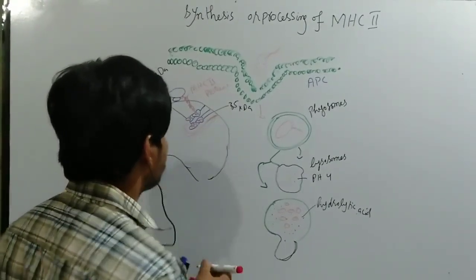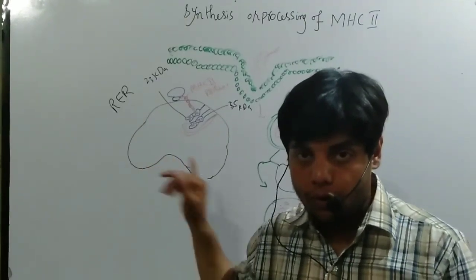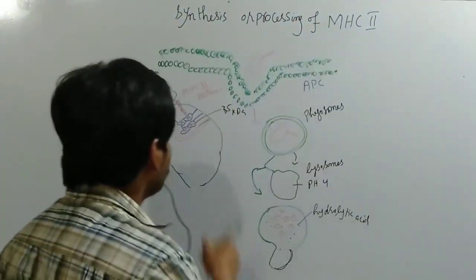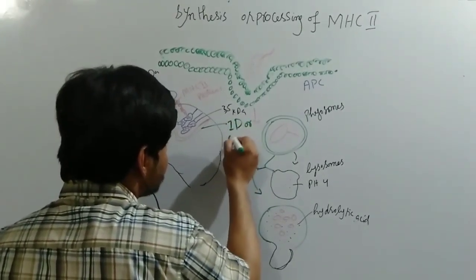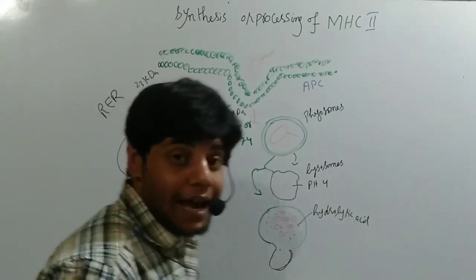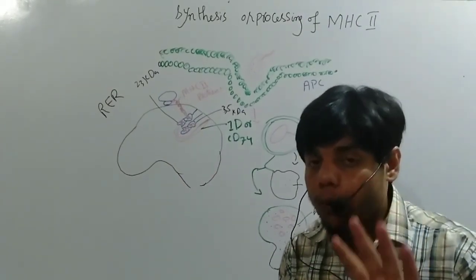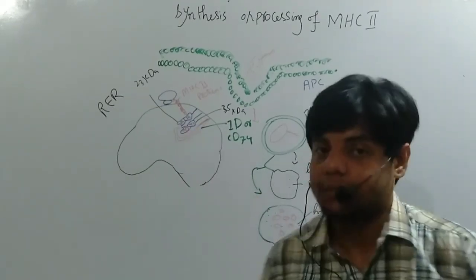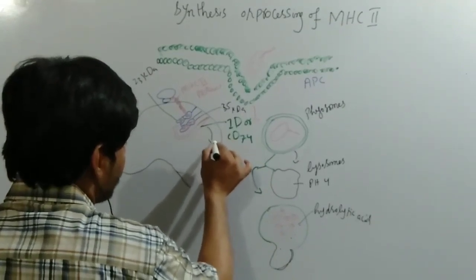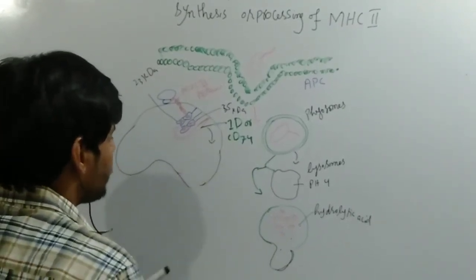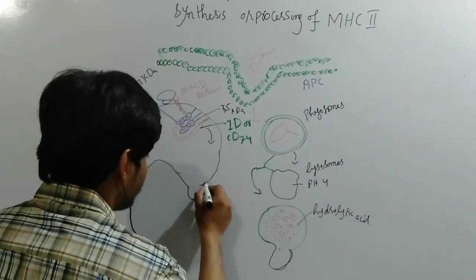After that we have another protein that can block the binding site of the MHC2 molecule. This protein is called the invariant chain, or Ii, also known as CD74 protein. This Ii or CD74 protein will block the binding site of the MHC2 molecule to prevent any antigen from binding at that specific area. After that, this MHC2 molecule is shifted and released out from the endoplasmic reticulum.